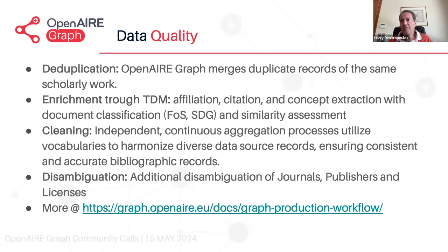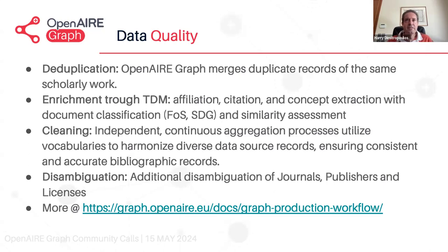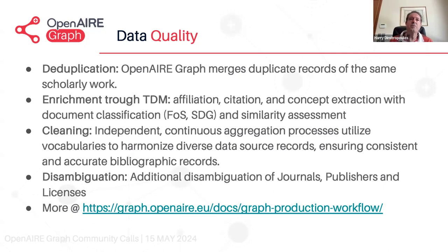I want to mention one slide on data quality because it involves the enrichment through mining. The graph merges duplicates of the same scholarly work. There's the enrichment through mining we'll cover in this talk, and there is a cleaning stage — an independent continuous aggregation process that utilizes vocabularies to harmonize the diverse data source records and ensure consistent and accurate bibliographic records. There is also additional disambiguation of journals, publishers, and licenses. You can find more in the graph documentation pages.